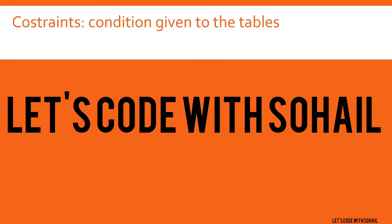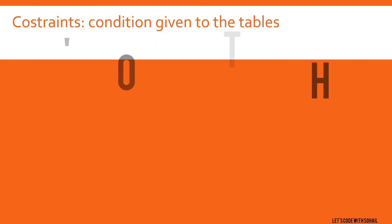Hello friends, welcome to the full series of SQL. In this video we will talk about constraints. A constraint is a condition given to a table. We give some conditions for any table — for example, an employee's name should be like this, an employee's salary should be like this. Whatever conditions we give to a table, we call that a constraint.